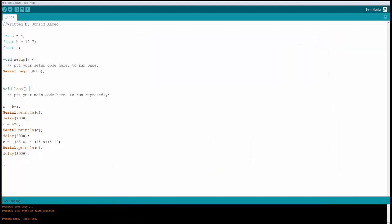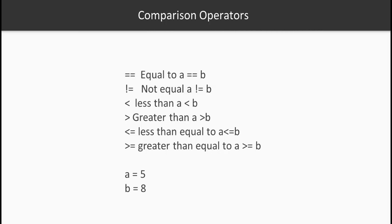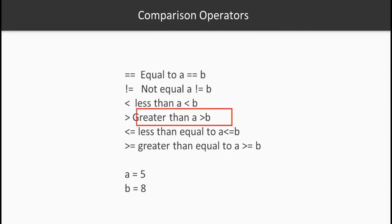The next set are the comparison operators, which are extremely important when you want to compare two values. You use == to check if a equals b, and != to check if they are not equal. There is also less than, greater than, less than or equal to, and greater than or equal to.